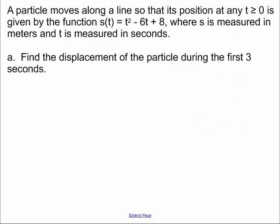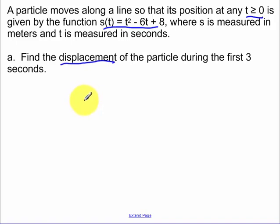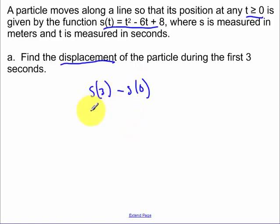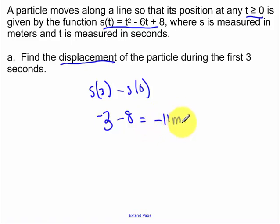In this example, a particle moves along a line so that its position at any time t ≥ 0 is given by a function, where s is measured in meters and t in seconds. To find displacement over the first three seconds: it's the final position minus the starting position. s(3) equals negative three and s(0) equals eight, so displacement is negative three minus eight, which is negative eleven meters.